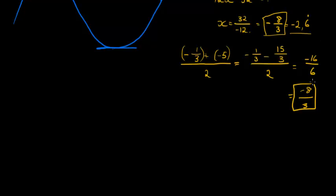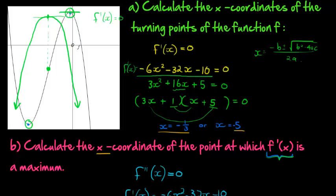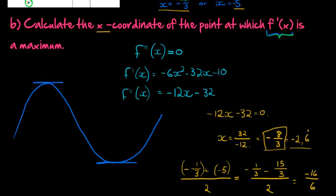So negative 8 over 3. That's what I had right here, isn't it? Which I simply showed you here that the inflection point is the point that is exactly halfway between the two turning points. So if you have the two x-coordinates for the turning point, the point halfway between them would be the inflection point.